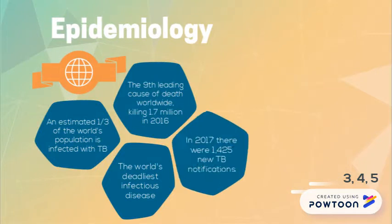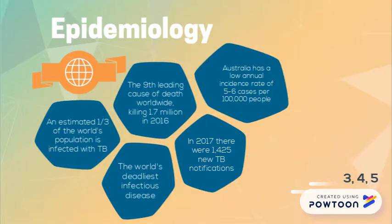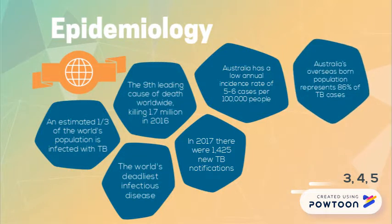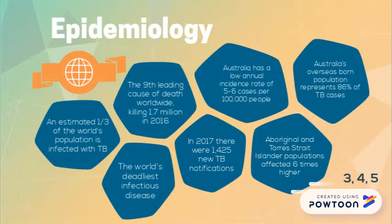In Australia in 2017, there were 1,425 new TB notifications, correlating to a low annual TB incidence rate of 5 to 6 cases per 100,000 population. Australia's overseas-born population continues to represent the majority of TB cases, and Aboriginal and Torres Strait Islanders record rates six times higher than the Australian-born non-Indigenous population.